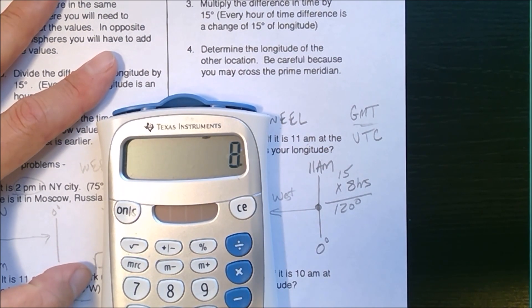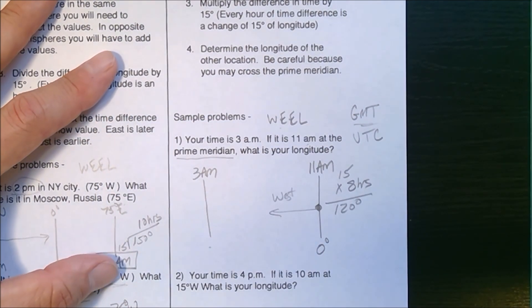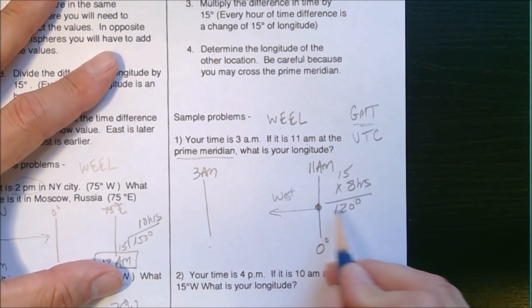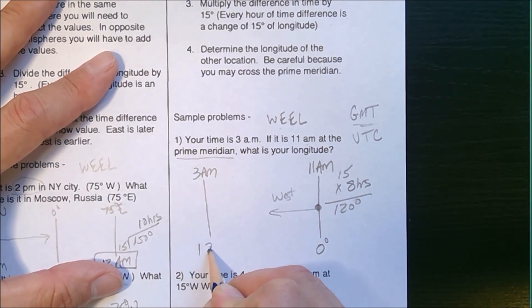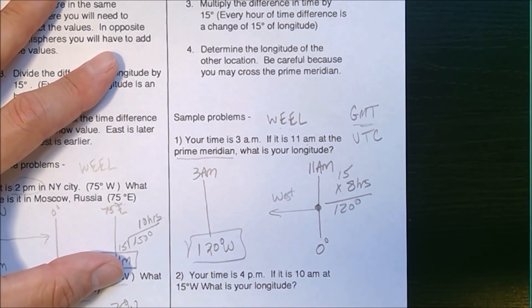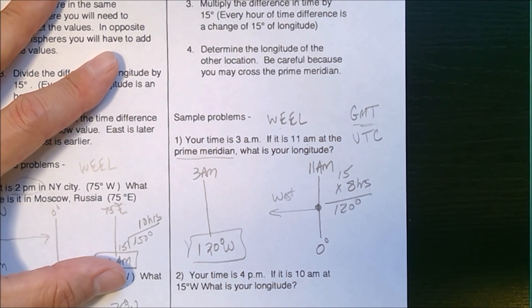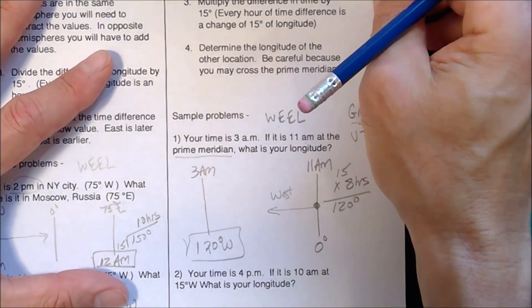Eight times 15 equals 120 degrees. I can't give a longitude without giving a direction. Longitude is east or west. Clearly, because we drew the map and we know the time is earlier, you are going west.